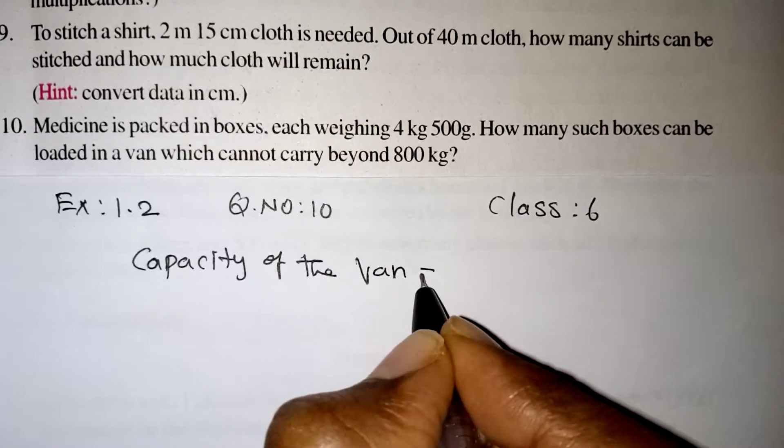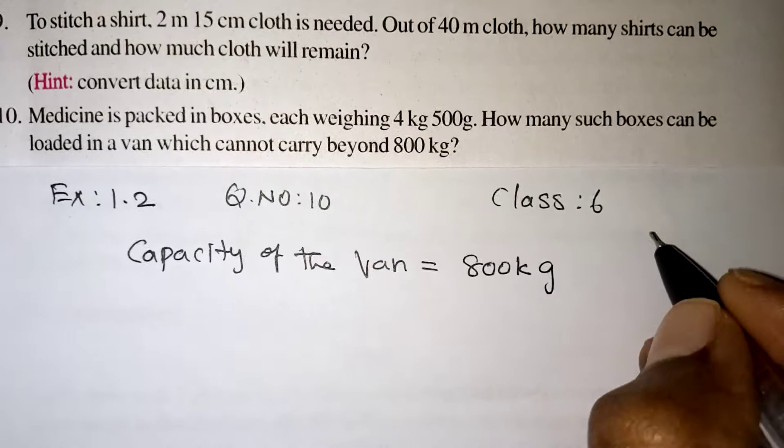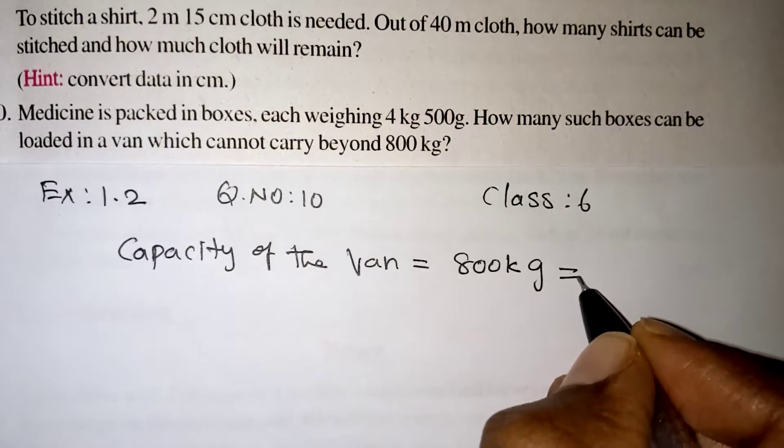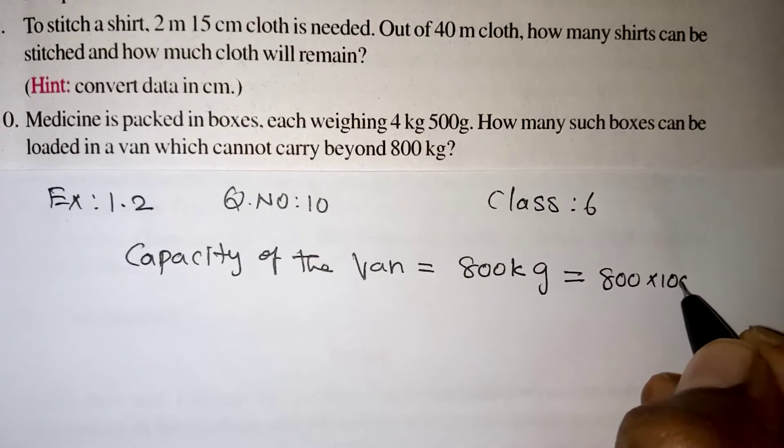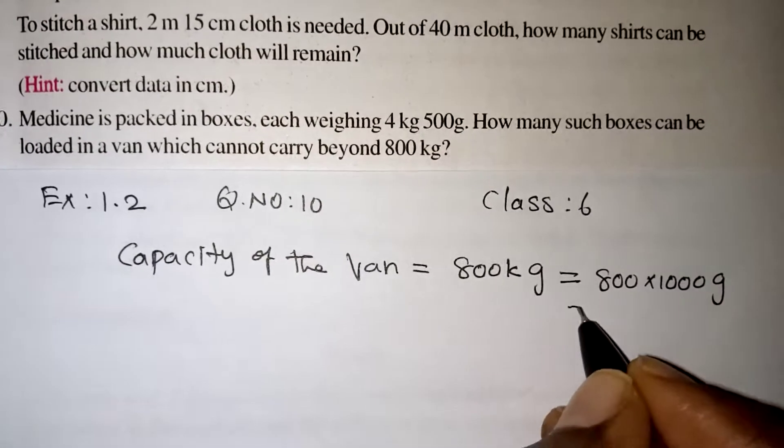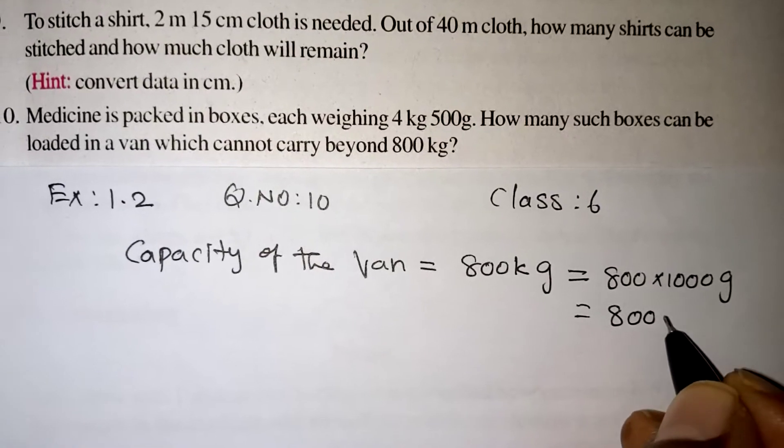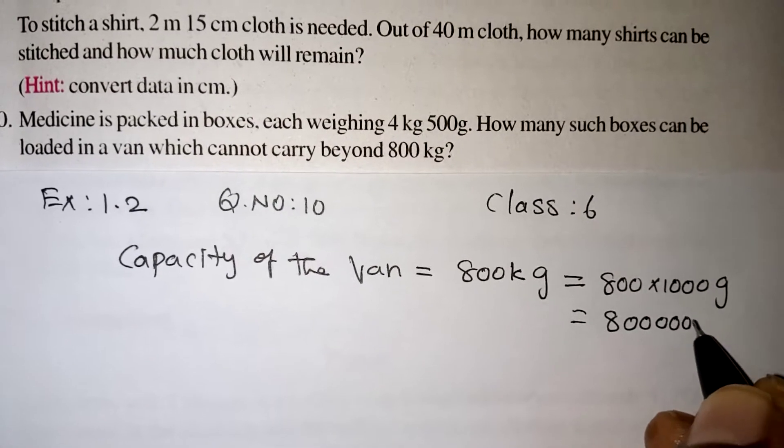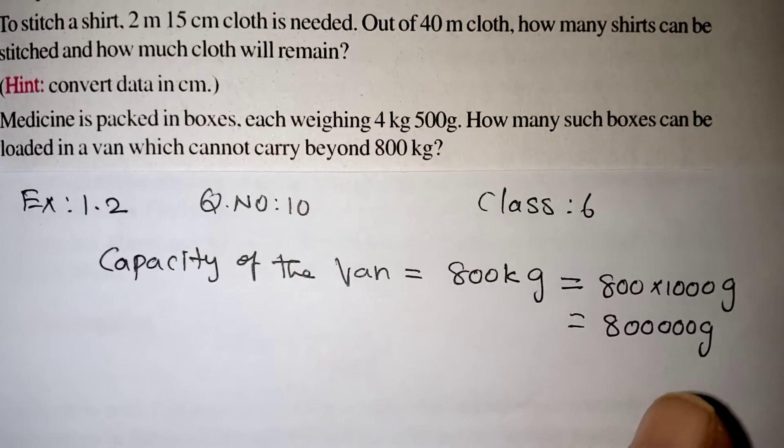Capacity of the van is equal to 800 kg. We know that 1 kg is equal to 1000 grams, so 800 kg will be 800 into 1000 grams. We will be getting 8 with five zeros, so 800,000 grams can be loaded in that van.